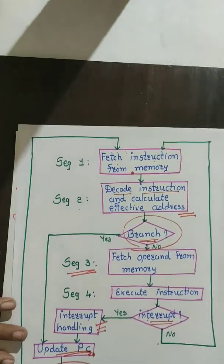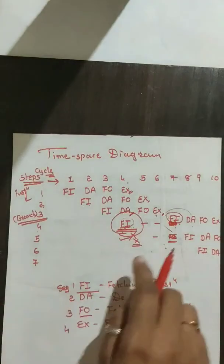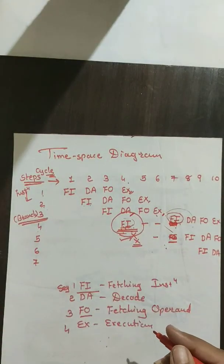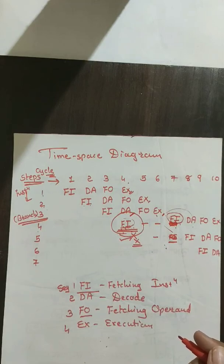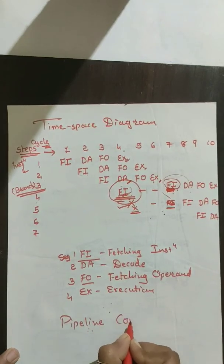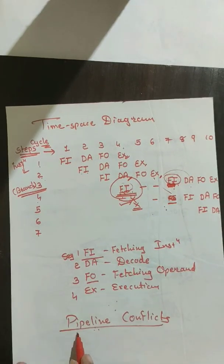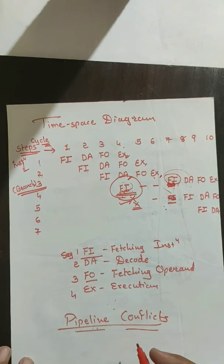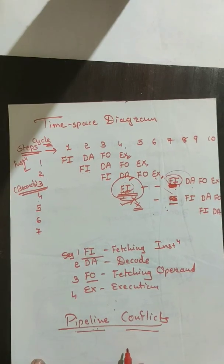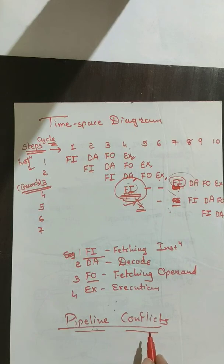I hope you all understand this four-segment pipelining and the time-space diagram. Now there are some conflicts that occur in pipelining — these are known as pipeline conflicts. We are going to study these pipeline conflicts in the next video. Thank you.